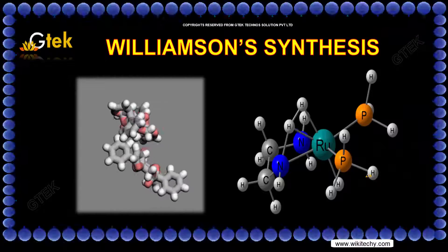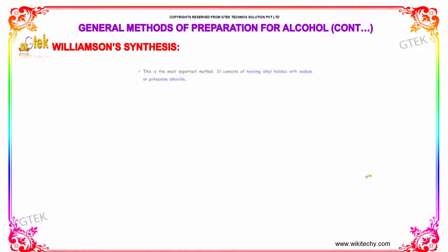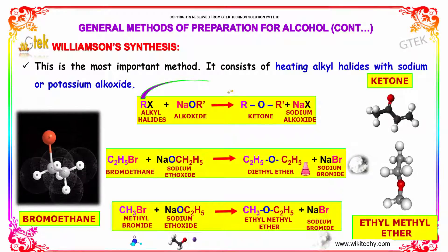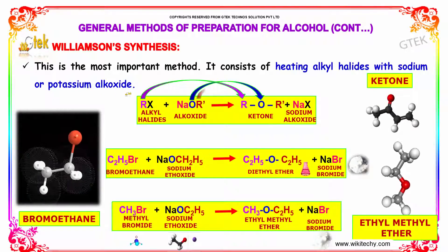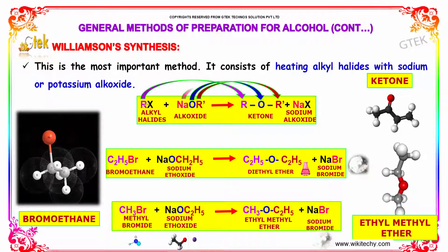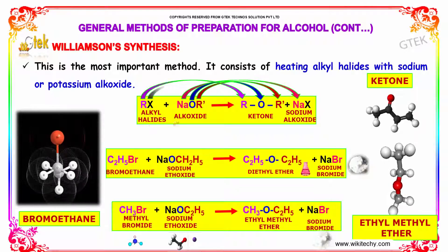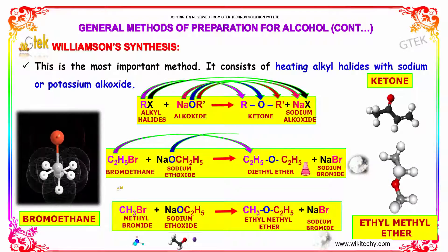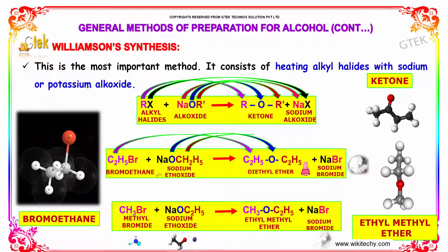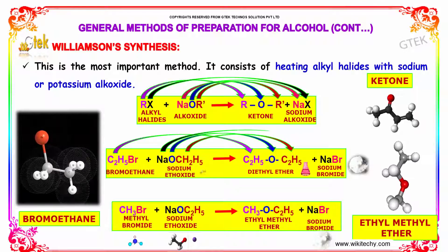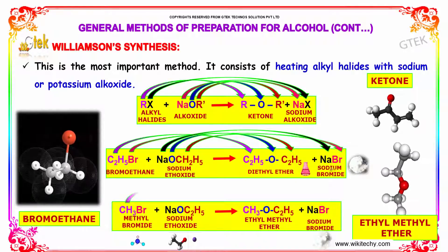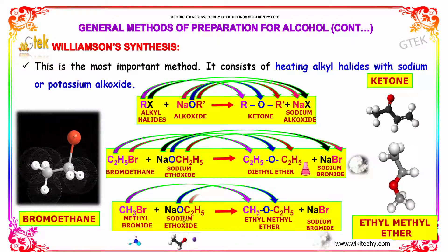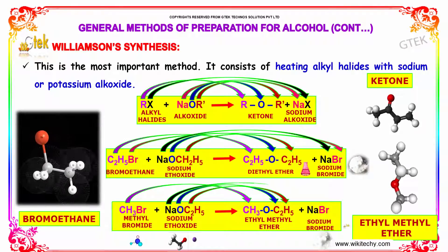Williamson Synthesis is the most important method for the preparation of ethers. It consists of heating alkyl halides with sodium or potassium alkoxide. Alkyl halides react with alkoxide to form an ether and sodium alkoxide. For example, bromomethane reacts with sodium ethoxide to form diethyl ether plus sodium bromide, and methyl bromide reacting with sodium ethoxide forms ethyl methyl ether and sodium bromide.